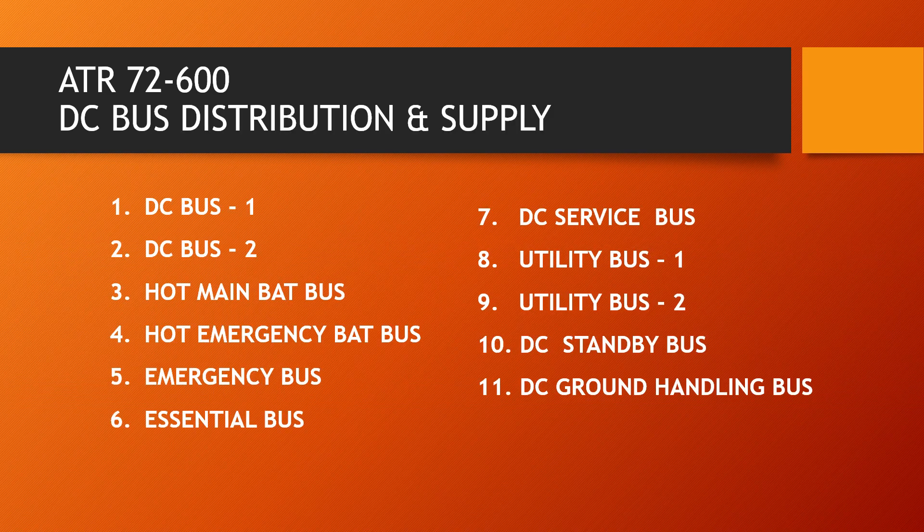Now I shall discuss how this generated DC power is distributed throughout the aircraft. There are 11 DC buses through which DC power is distributed. These are: DC Bus 1, DC Bus 2, Hot Main Bat Bus, Hot Emergency Bat Bus, Emergency Bus, Essential Bus, DC Service Bus, Utility Bus 1, Utility Bus 2, DC Standby Bus, and DC Ground Handling Bus.